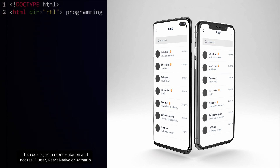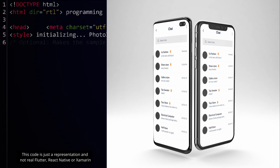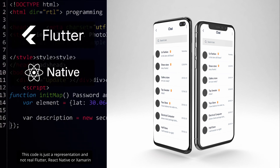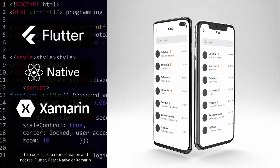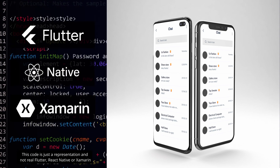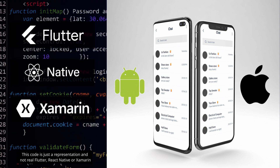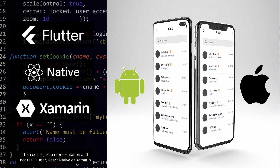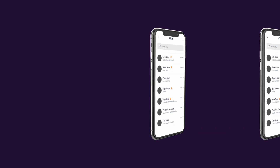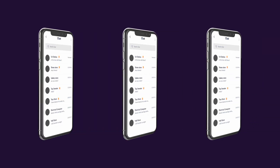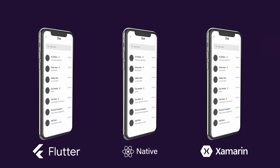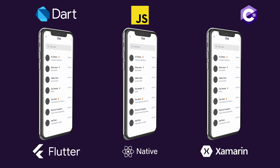For those of you who are new to the party, platforms like Flutter, React Native, and Xamarin let you generate mobile apps for both Android and iOS using a single code base. All three of them use different programming languages — Flutter uses Dart, React Native uses JavaScript, and Xamarin uses C Sharp.